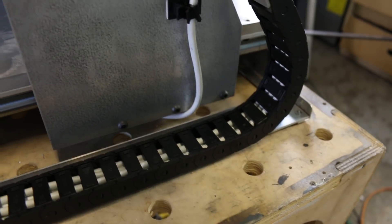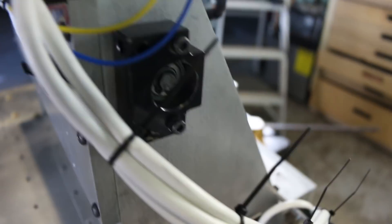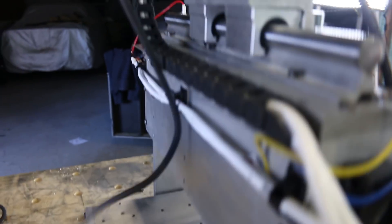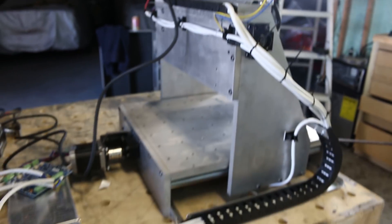Got the drag chain all buttoned up. I got some zip ties here. I got these little cable clamps on the back to kind of tidy up these wires a bit. Let's see how our drag chain works.